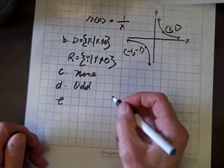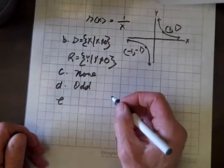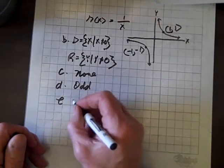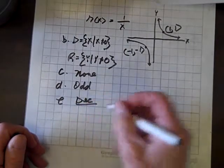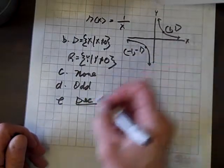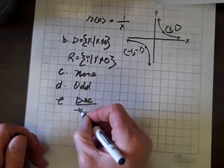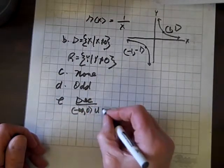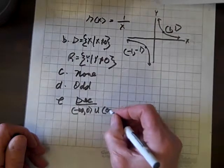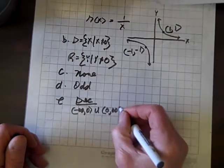It's also decreasing, so it's decreasing on the interval (-∞, 0) ∪ (0, ∞).